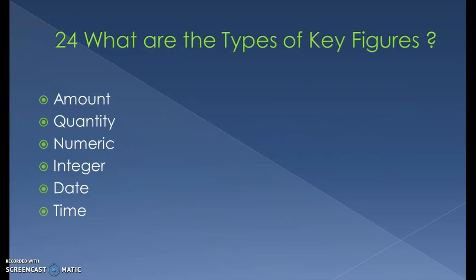What are the types of key figures? They are: amount, quantity, numeric, integer, date, and time. Among these, amount and quantity must be followed with either a currency or a unit — this is mandatory.